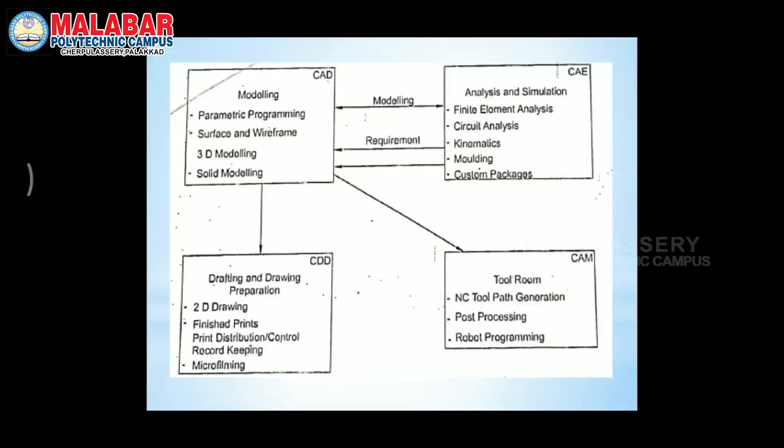CAD uses parametric programming, surface and wireframe 3D modeling, and solid modeling for product design. In manufacturing, different methods are used — wireframe models, surface modeling, solid modeling. Using the CAD product model, it is transferred to the next module for analysis and simulation.